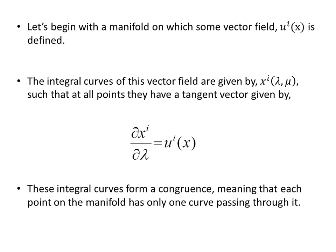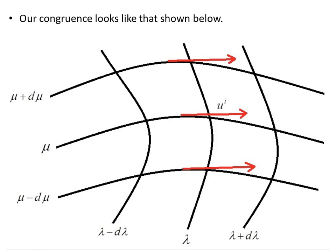We'll begin with a manifold on which some vector field u of x is defined. The integral curves of this vector field are given by x of lambda mu, such that at all points they have a tangent vector given by dx i d lambda equals u of x. These integral curves form a congruence, meaning that each point on the manifold has only one curve passing through it. Our manifold looks like this with the congruence lines on it.